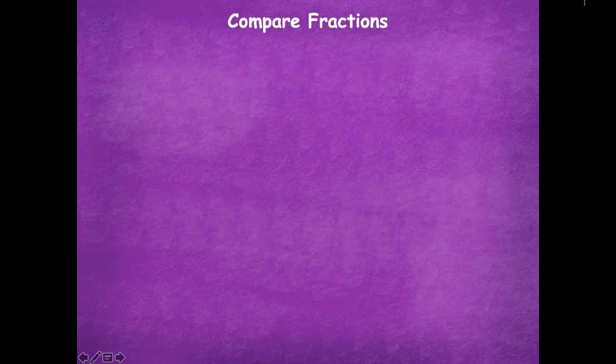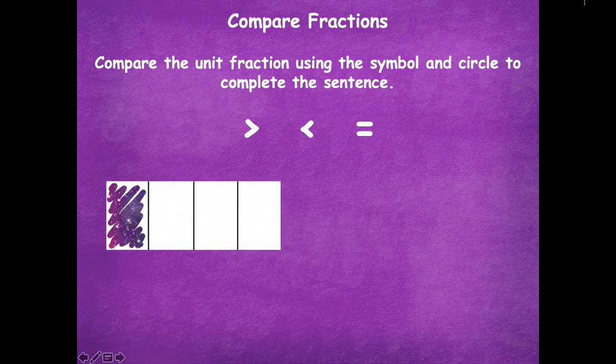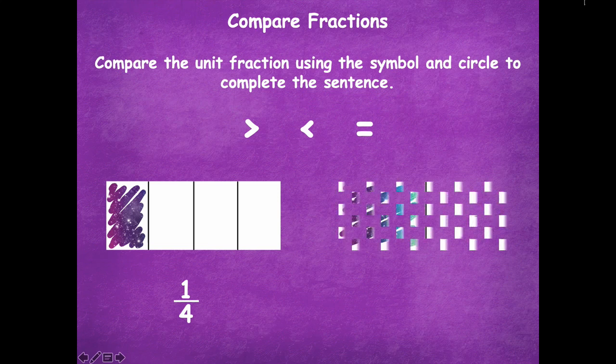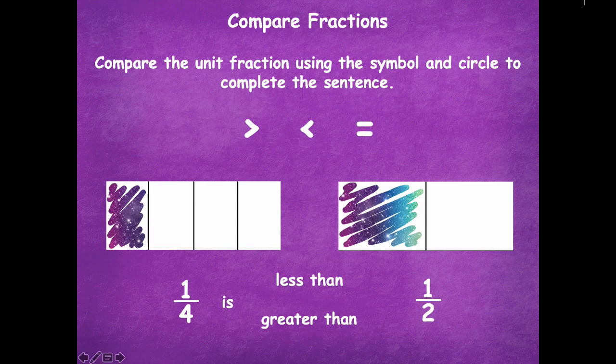Alright friends, here's your next one. Okay, same directions, same symbols, new unit fractions. Okay, so one fourth and one half. So go ahead and draw on your dry erase board the correct symbol, and then LT or GT. Okay, so go ahead and pause the video, do that, and then click play when you're ready to go over it together.